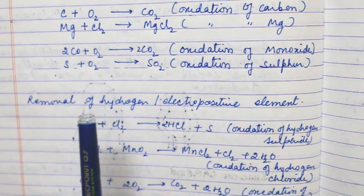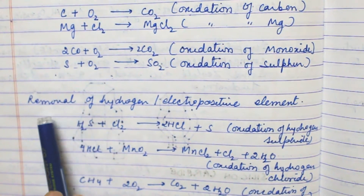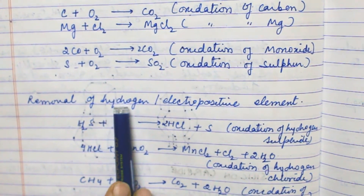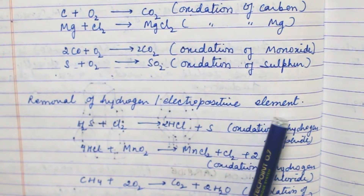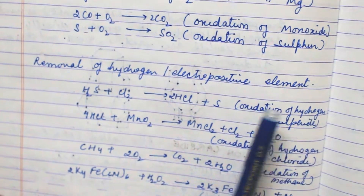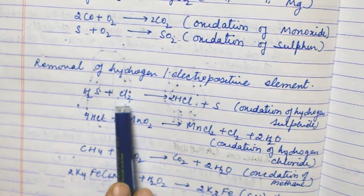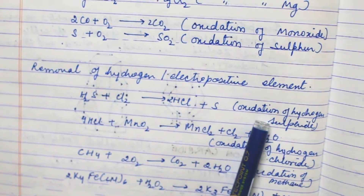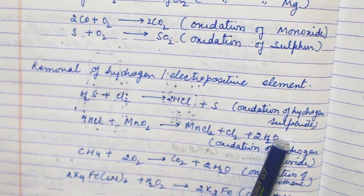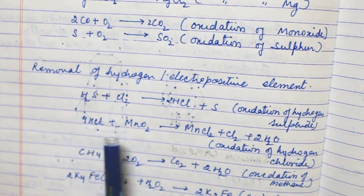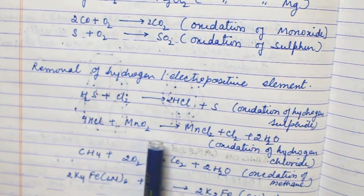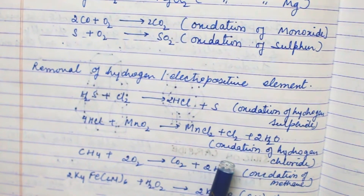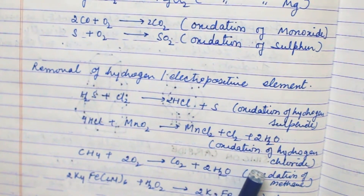The second definition of oxidation is removal of hydrogen or electropositive element — hydrogen has a positive charge, so it is an electropositive element. Here H2S when reacted with Cl2 forms 2HCl and S, so oxidation of hydrogen sulfide takes place. Here HCl and MnO2 react with each other, so oxidation of hydrogen chloride takes place.